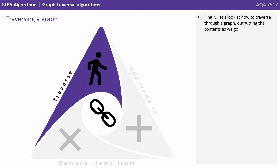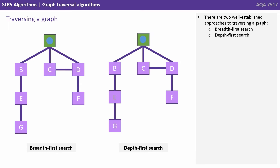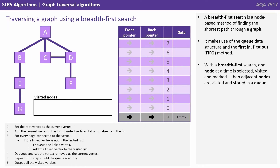So finally, let's look at how to traverse through a graph, outputting the contents as we go. There are two well-established approaches to traversing a graph: the breadth-first search and the depth-first search. A breadth-first search is a node-based method of finding the shortest path through a graph. It makes use of the queue data structure and the first-in, first-out method. With a breadth-first search, one node at a time is selected, visited and marked, and then adjacent nodes are visited and stored in a queue.